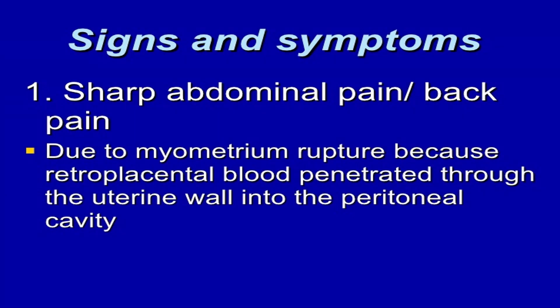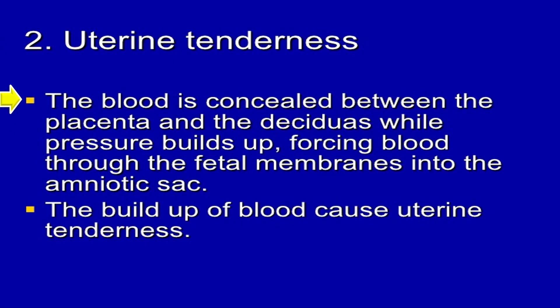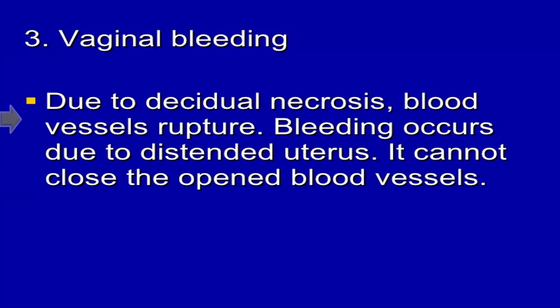Signs and symptoms of abruptive placenta include sharp abdominal pain or back pain due to myometrium rupture, because retroplacental blood penetrates through the uterine wall into the peritoneal cavity. Another symptom is uterine tenderness, because blood is concealed between the placenta and the decidua while pressure builds up, forcing blood through the fetal membranes into the amniotic sac. The buildup of blood causes uterine tenderness. Other symptoms include vaginal bleeding due to decidual necrosis and blood vessel rupture; bleeding occurs due to a distended uterus that cannot close the open vessels.